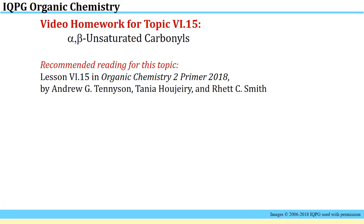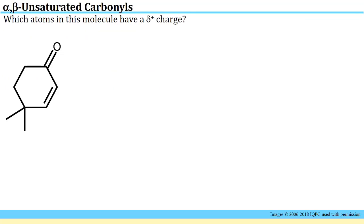Welcome to the online video content for topic 6.15, having to do with the properties and reactions of alpha-beta unsaturated carbonyls. Before attempting the problems in this video homework, I recommend that you read lesson 6.15 in the Organic Chemistry Primer 2018 by professors Hujiri, Tennyson, and Smith. The reactions we're going to consider involve the reactions of nucleophiles with alpha-beta unsaturated carbonyls. Nucleophiles are naturally attracted to partial positive charges, so this first problem is asking you which atoms in this molecule have a partial positive charge and should be targets for reaction with nucleophiles.